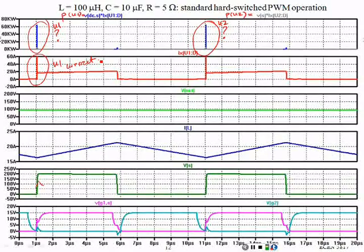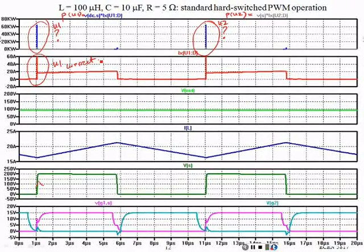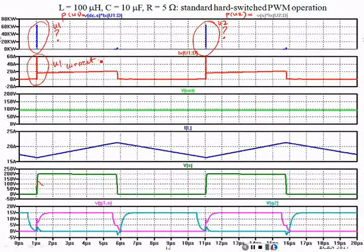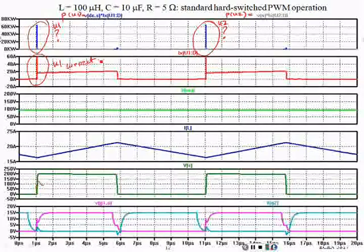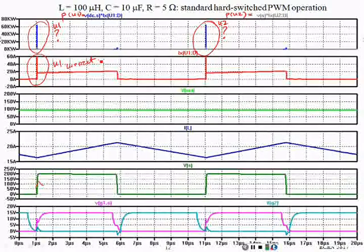To give perspective on scale: the output power in this case is about 100 volts times about 20 amps — approximately 2 kilowatts of output power. These instantaneous power dissipation spikes are several tens of kilowatts. Fortunately, they are very short, but they are large in magnitude. When you integrate those over a period, they produce a substantial amount of what is normally referred to as switching loss.